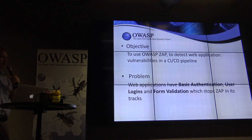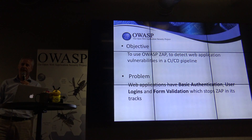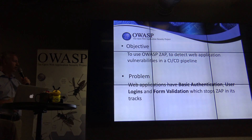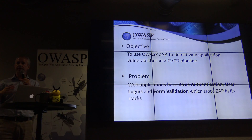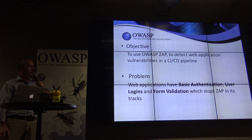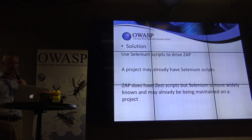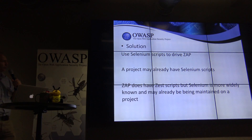We have basic authentication in our project to keep it secret from the rest of the world. We've also got user logins and form validation. When you're doing passive scans in ZAP, all those things will stop it if you don't drive it properly with Selenium.